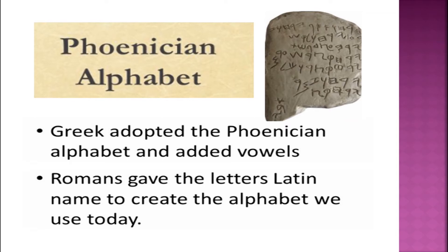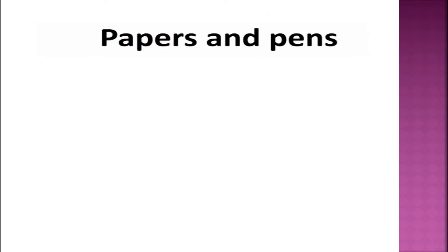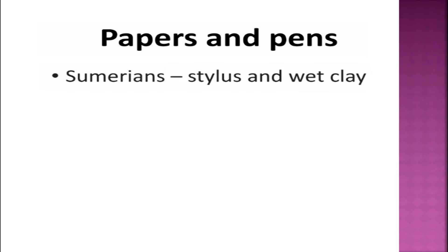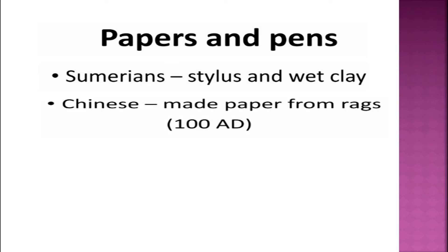As alphabets became more popular, more people were writing information down. Pens and paper began to be developed. It started off as just marks in wet clay, but later paper was created out of papyrus plants. The Sumerians' input technology was a stylus that could scratch marks in wet clay. Around 100 AD, the Chinese made paper from rags, on which modern-day papermaking is based.